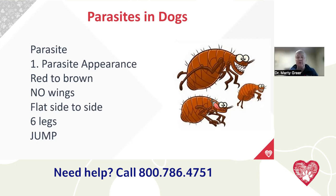This is pretty much what a flea looks like with some magnification. They're reddish brown in color and they don't have wings — this is a really important distinction, because if something is flying around your house, it may be some other kind of bug, but it's not a flea. Fleas don't come with wings. They're flattened side to side, unlike a tick, which is flat top to bottom. This allows fleas to dart between hairs really quickly on your dog, cat, or even on you.